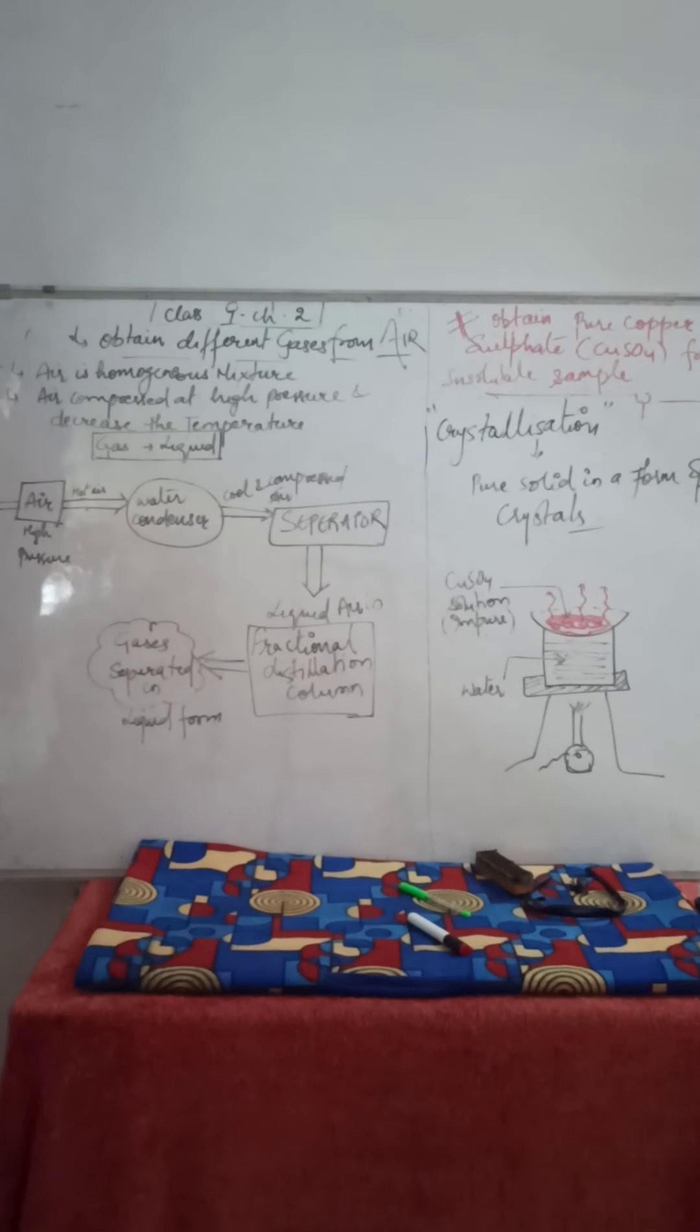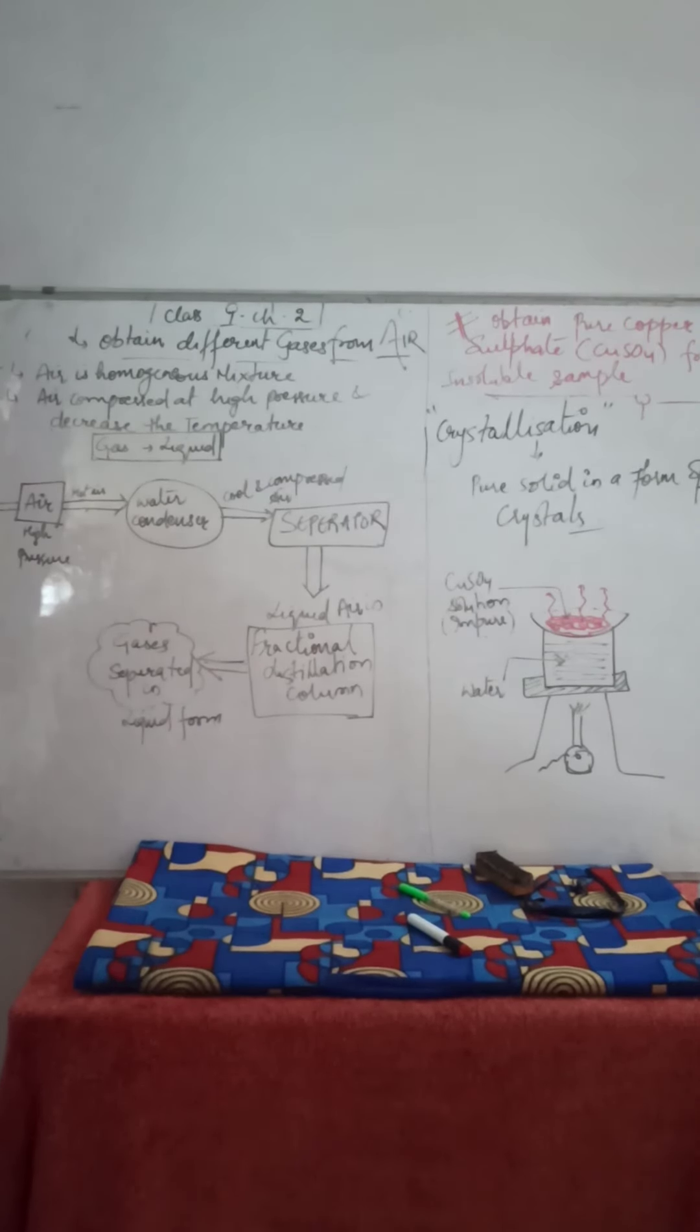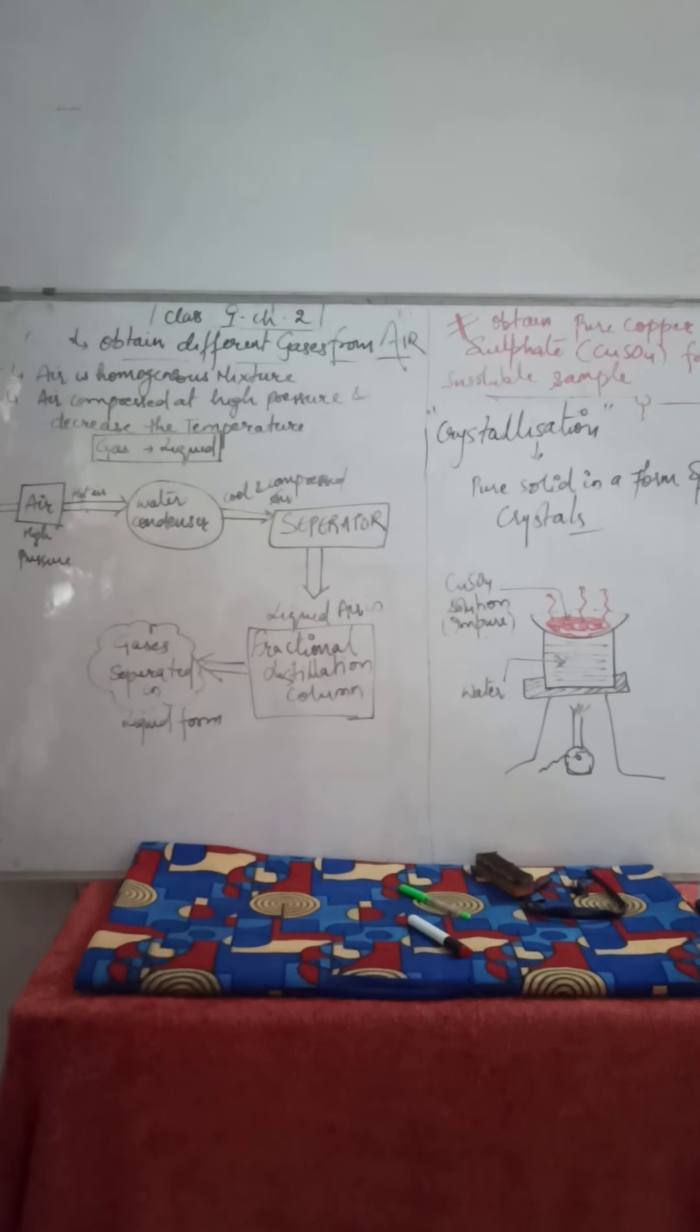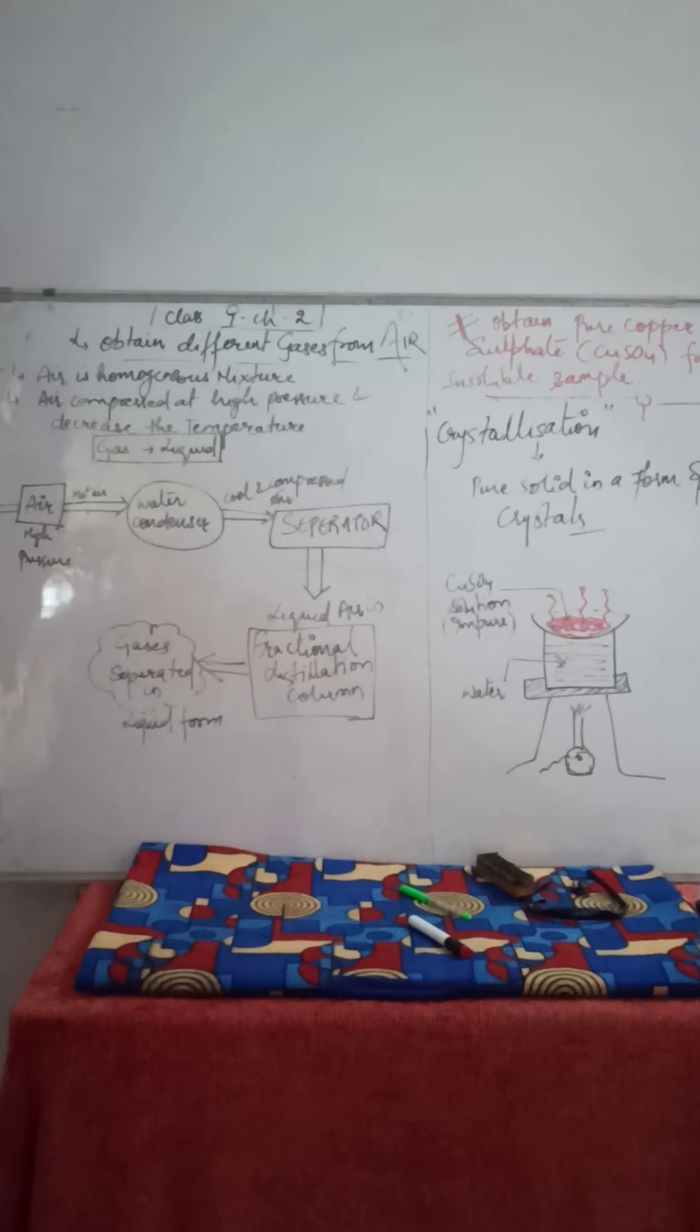The aim is to obtain pure copper sulfate, CuSO4. One copper (Cu), one sulfur (S), four oxygen (O). CuSO4 from the impure sample. We have to take a beaker, add water and add copper sulfate salt in solid form. Stir it completely so that all the copper sulfate crystals dissolve in water. This makes the copper sulfate solution now, but this solution is impure because many impurities are present.